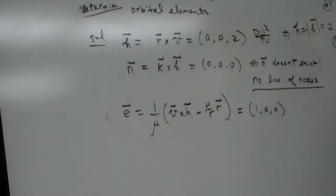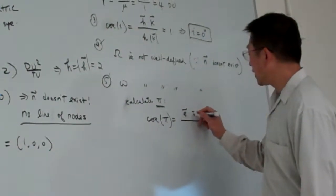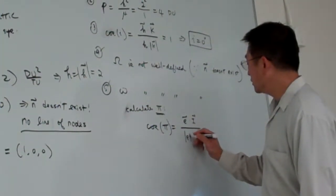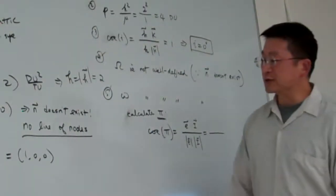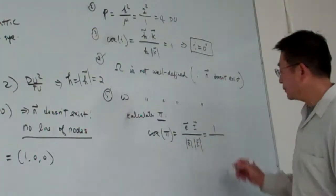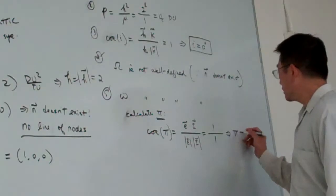Okay. So that means here, cosine pi equal to e vectors dot i vectors, and e and pi. And e vector dot i vectors, and that one is equal to one. And this is one. So therefore, pi equal to zero degrees.